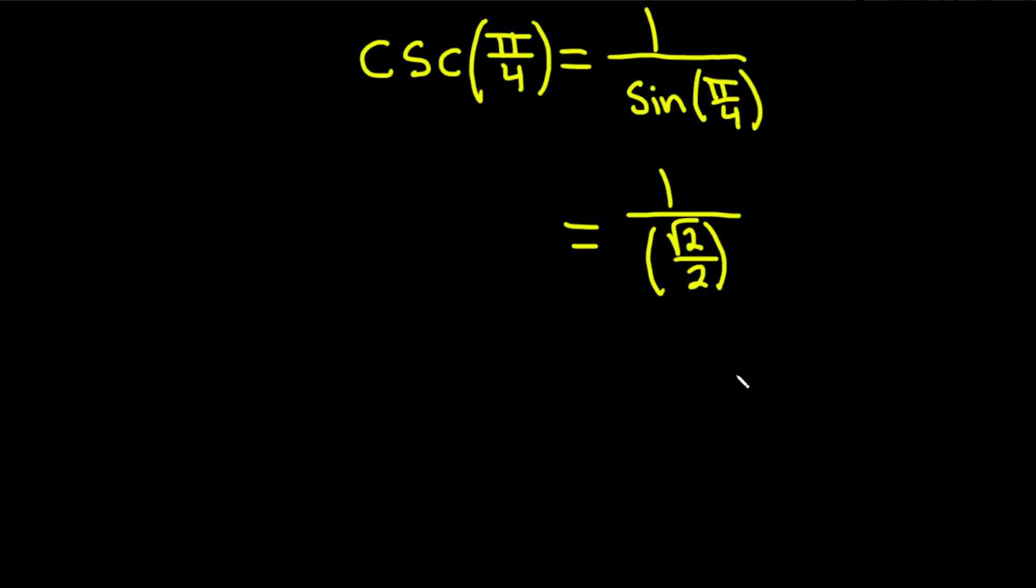Whenever you divide, you really multiply by the reciprocal. So instead of 1 divided by the square root of 2 over 2, it's going to be 1 times the reciprocal of the square root of 2 over 2, which is 2 over the square root of 2. So we end up with 2 over the square root of 2.